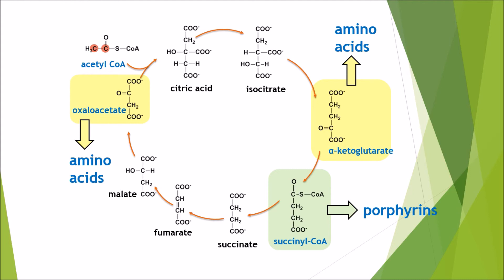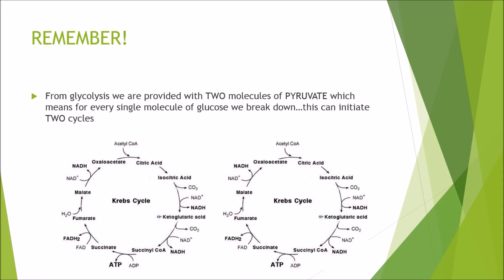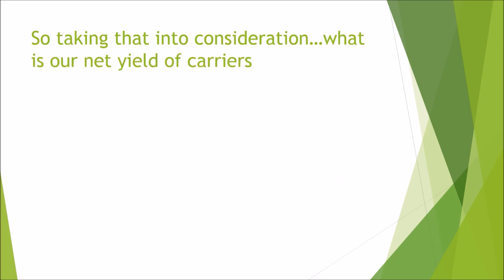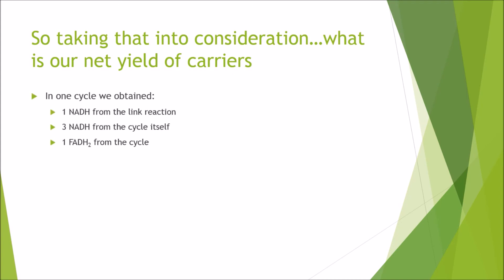Throughout the Krebs cycle you can end up with precursors for different things. For example, oxaloacetate and alpha-ketoglutarate can both spin off to form amino acids, and succinyl CoA can go off to form porphyrins. Also remember: from glycolysis we are provided with two molecules of pyruvate, meaning every single molecule of glucose can initiate two Krebs cycles. So our net yield per cycle is one NADH from the link reaction, three NADHs from the cycle itself, and one FADH2 from the cycle — giving us eight reduced NADHs and two reduced FADH2s per glucose molecule.